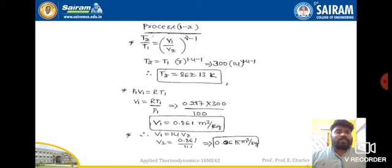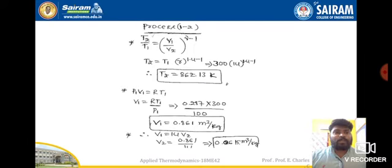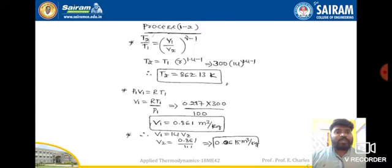Now for process 1 to 2, which is an adiabatic process, the formula is: t2/t1 = (v1/v2)^(γ−1). In this formula, everything except t2 is known, so we can find t2. We also need v1, which we don't yet know directly.